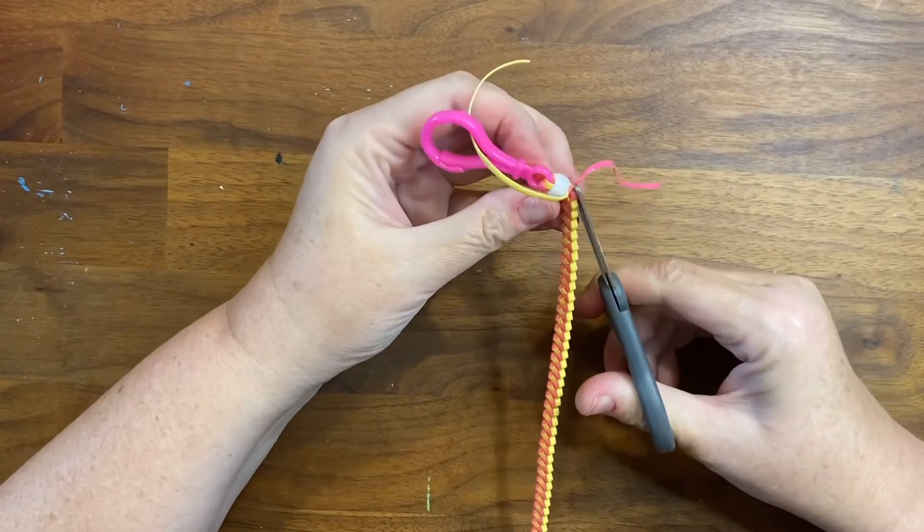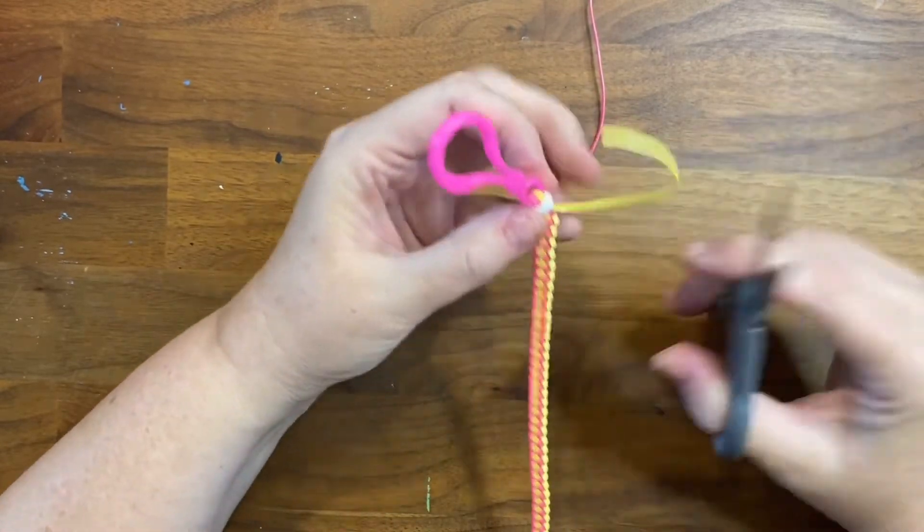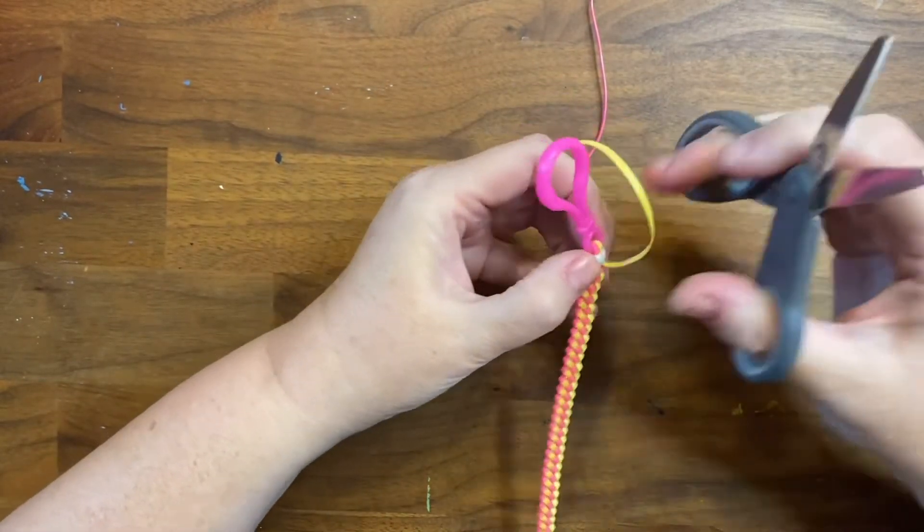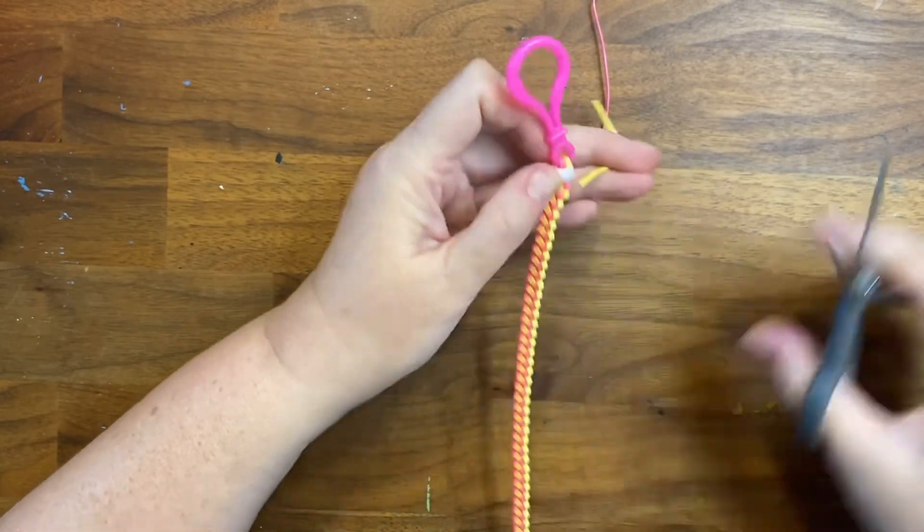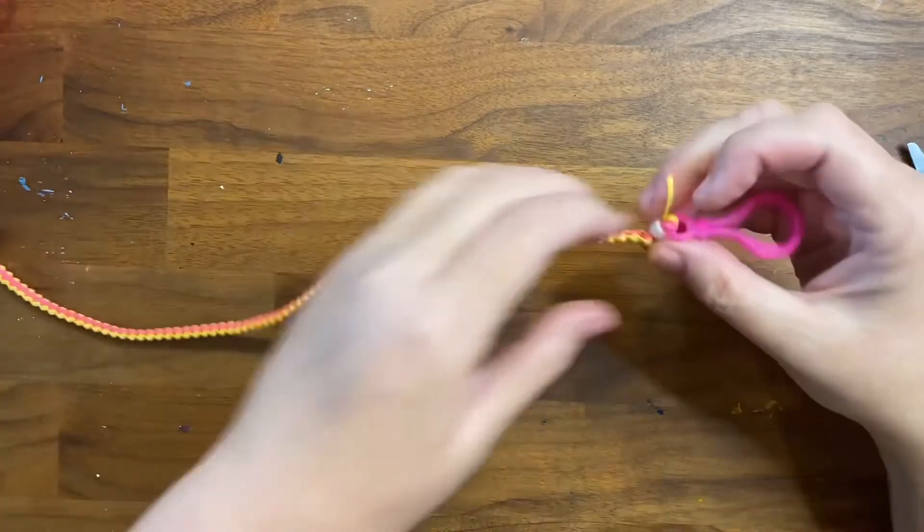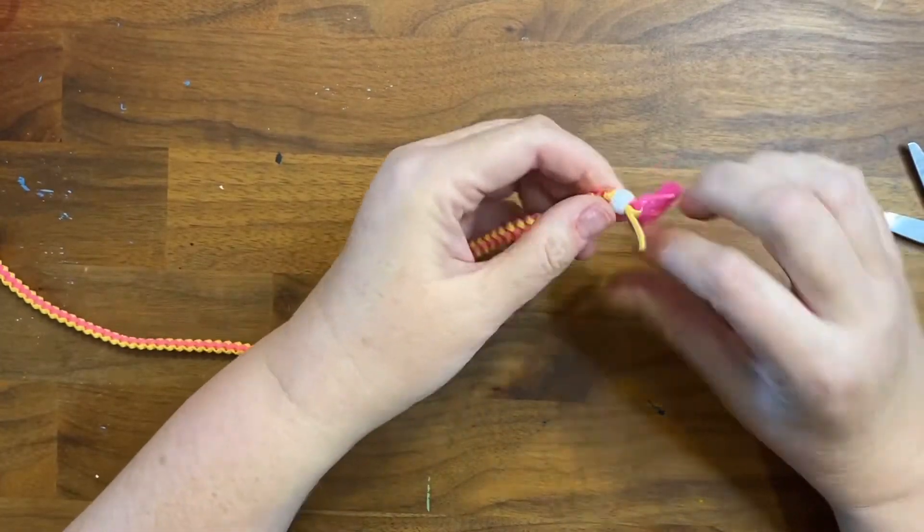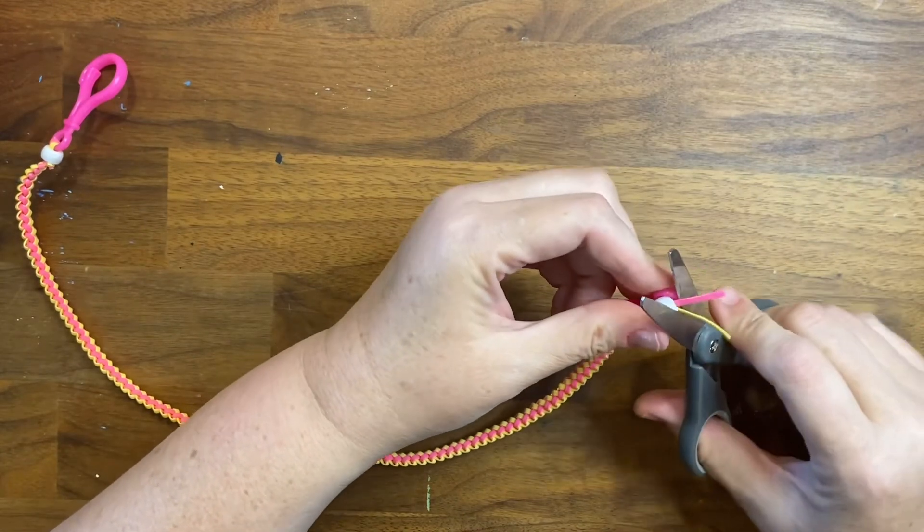This part is optional. And just trim off the little excess. You should also go back to the first end and trim any extra bits that are there and you'll see there I fed them back through the bead to help keep them secure.